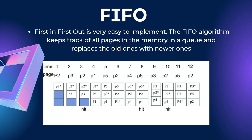FIFO is the simplest page replacement algorithm. In this algorithm, the operating system keeps track of all pages in memory in a queue. The oldest page is at the front of the queue. When a page needs to be replaced, the page at the front of the queue is selected for removal. When a new page comes in from secondary memory to main memory, it selects the front of the queue — the oldest page — and removes it.